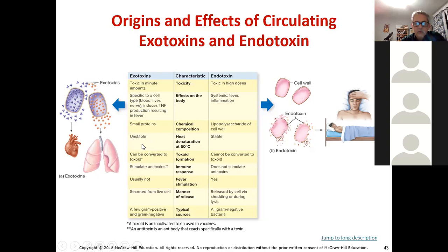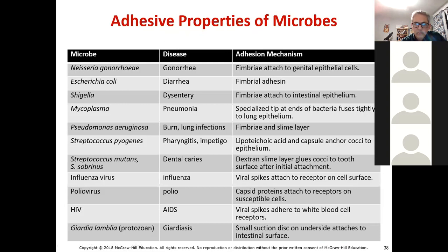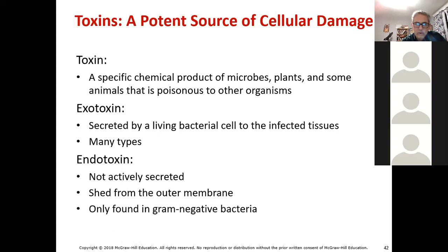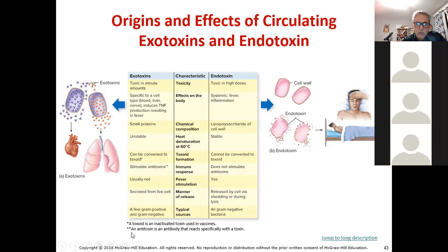A toxoid is an inactivated toxin. In the case of exotoxins, we can convert them into something that elicits an antibody response — essentially using them as a vaccine against the toxin. We cannot do that with endotoxins. Antitoxins are usually antibodies produced to help neutralize a toxin.